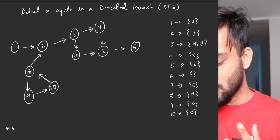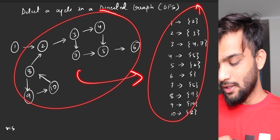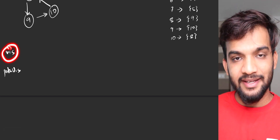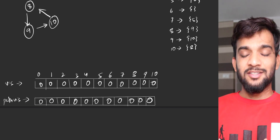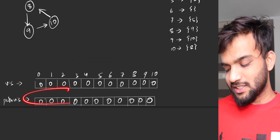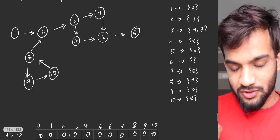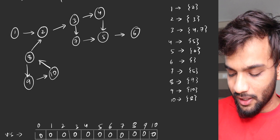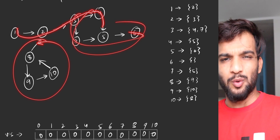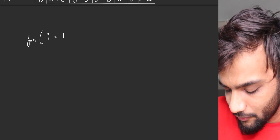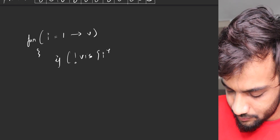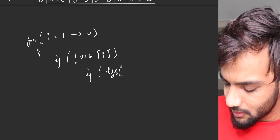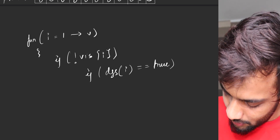To solve this using DFS, we draw the adjacency list and take two visited arrays: the visited array and the path visited array. We have 10 nodes so we take arrays of size 10. We do this component-wise, iterating from node 1 to V, and if a node is not visited we call DFS check on it. If DFS check returns true, there is a cycle, and we return true.